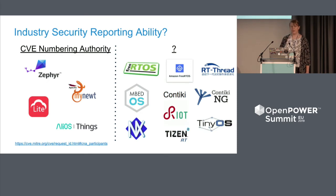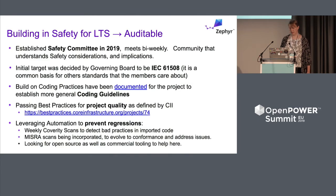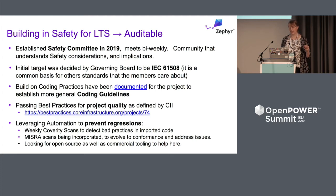There are very few RTOSs that have an ability to report and work with the CVE system. MyNuke gets it through Apache; Huawei has it; AliOS has it; but the other RTOSs do not. And that's one of the things we think is important — we want to make sure that the endpoints are secured so that we have secure communication paths as well.